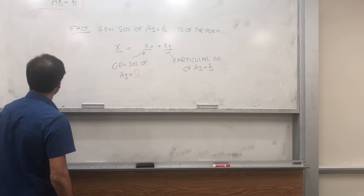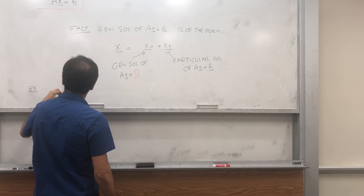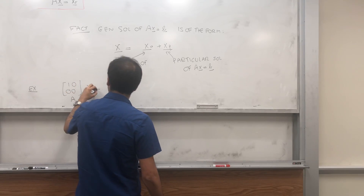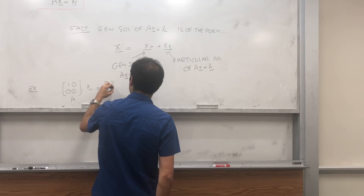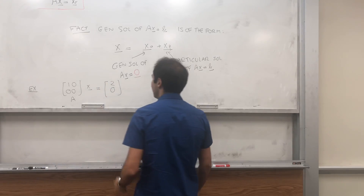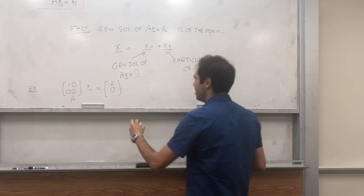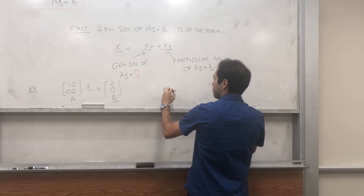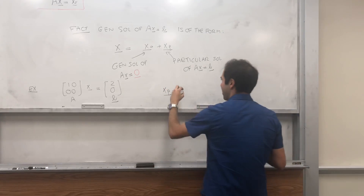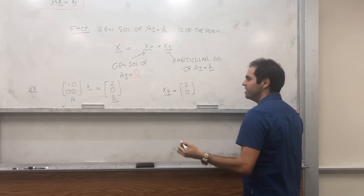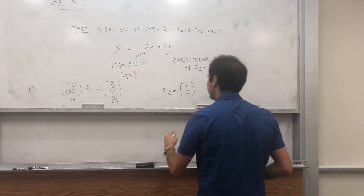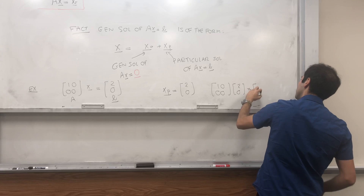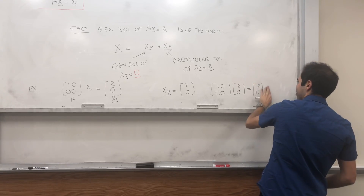Just a small example. Suppose you want to solve the matrix [1, 0; 0, 0] times x equals [2; 0]. In order to solve this, you find a particular solution — let's just guess xp equals [2; 0]. And indeed this works, because [1, 0; 0, 0] times [2; 0] equals [2; 0], which is what we want.